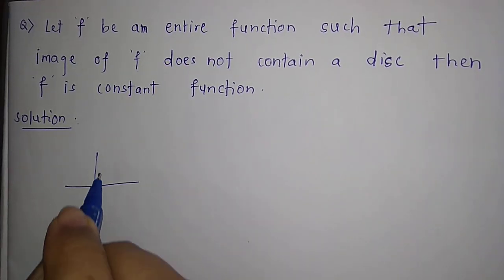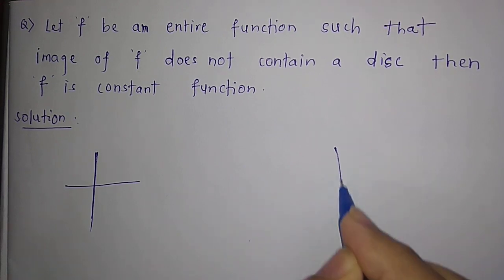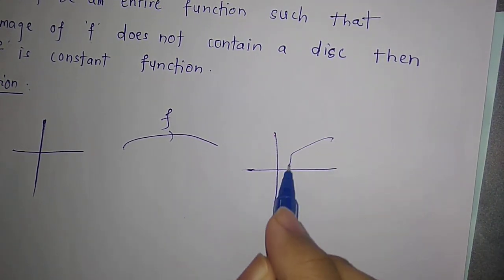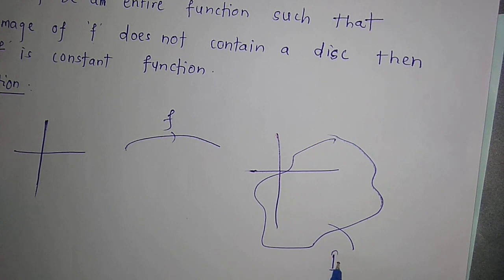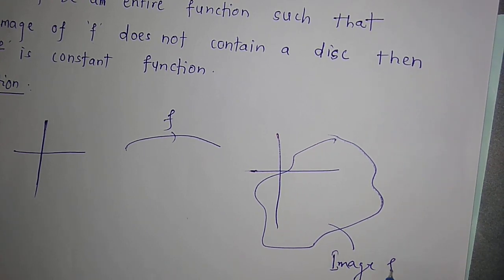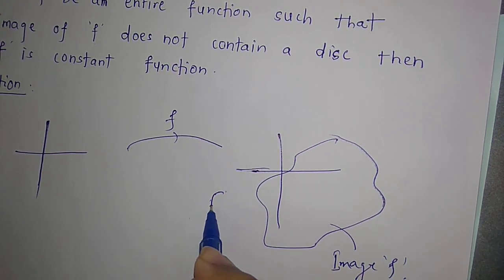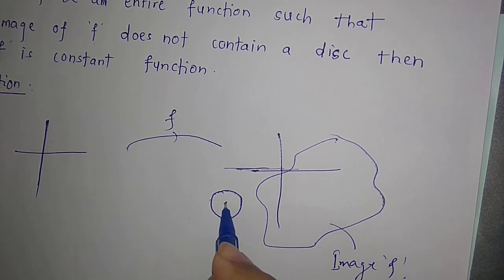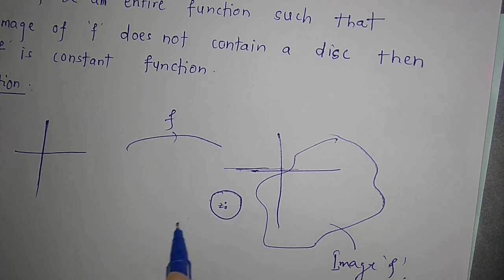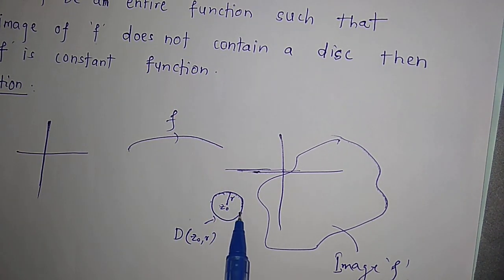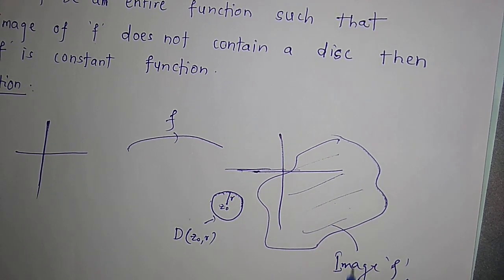Suppose this is your domain — the complex numbers — and this is your codomain, and the function is defined like this. This is the image of f, and suppose this is a small disk centred at z0 with some radius r. We denote this disk by D(z0, r), and the condition says that this disk does not lie inside the image of f.